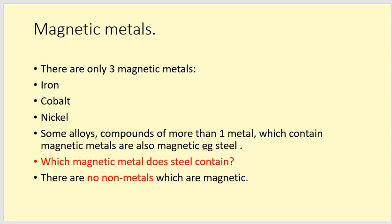If you've got more than one compound, that's an alloy. If they contain one of these three magnetic metals, then the compound can also be magnetic. So steel, for example, is a magnetic compound. Red question is for you to find out which magnetic metal does steel contain?